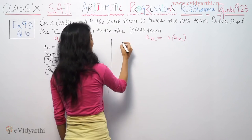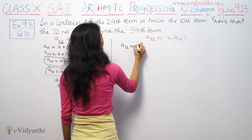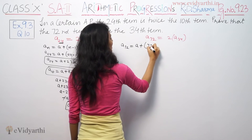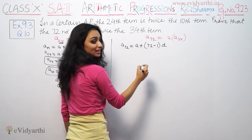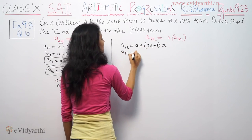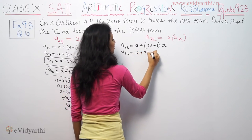72nd term, 72nd term is A72, A plus N is 72 minus 1D. A72 is equal to A plus 71D.